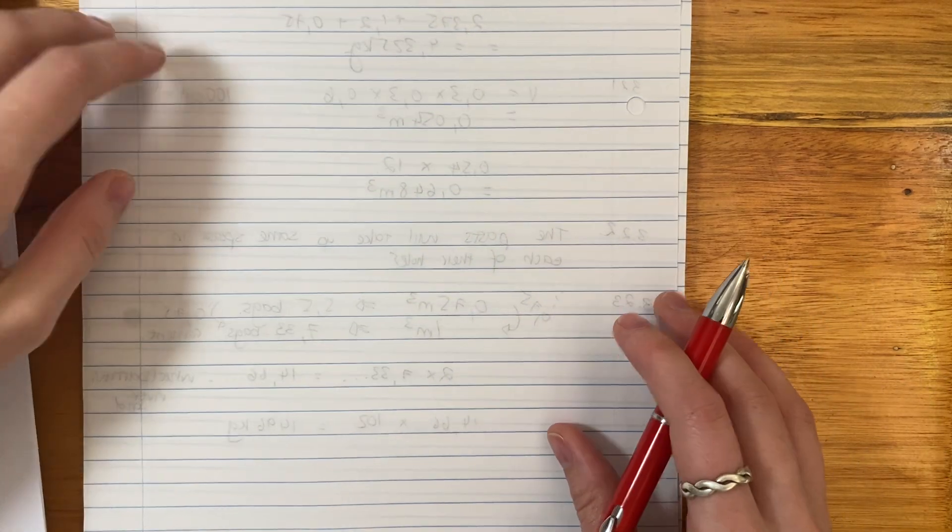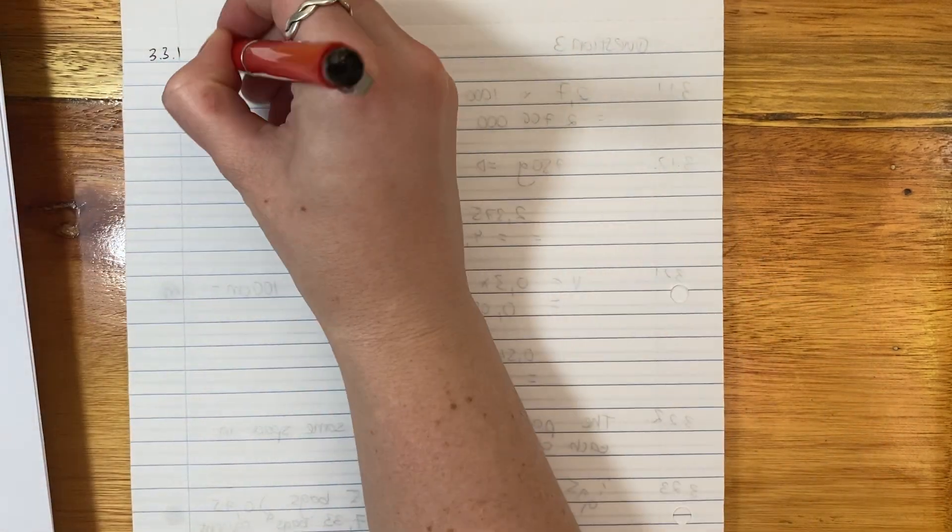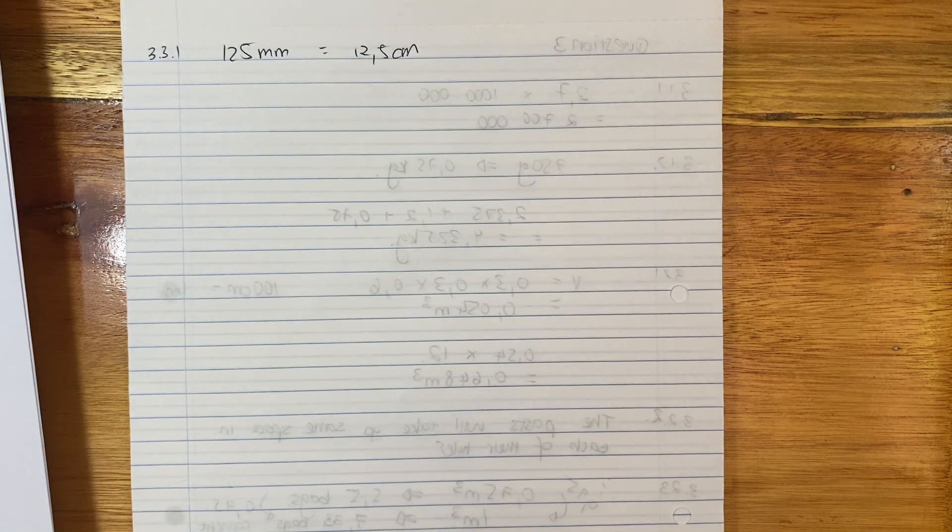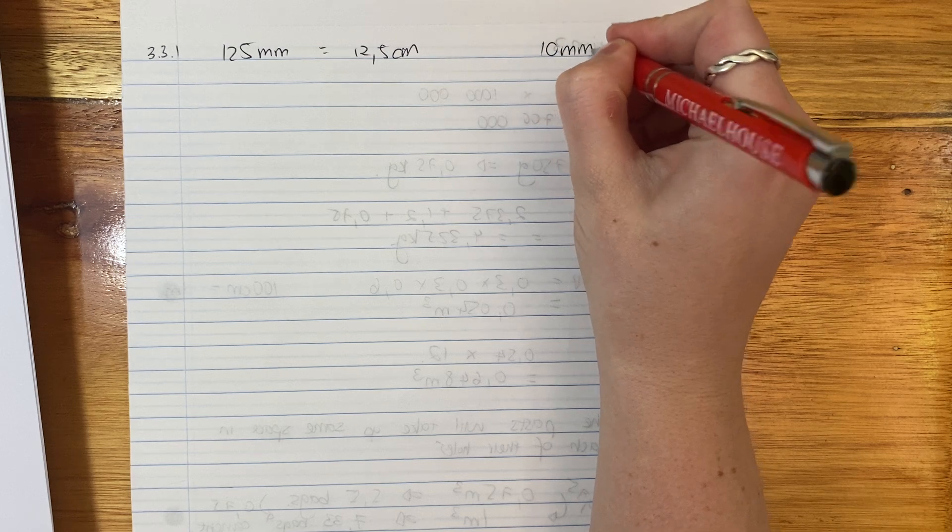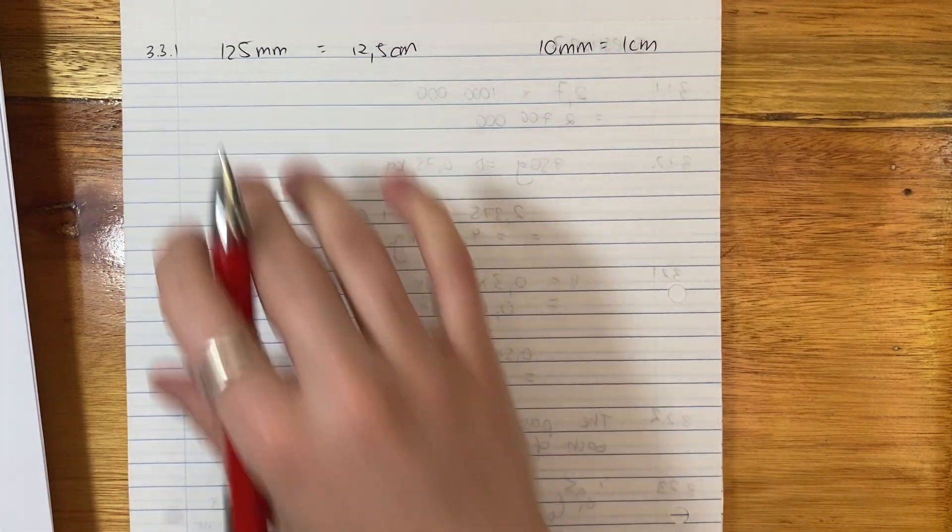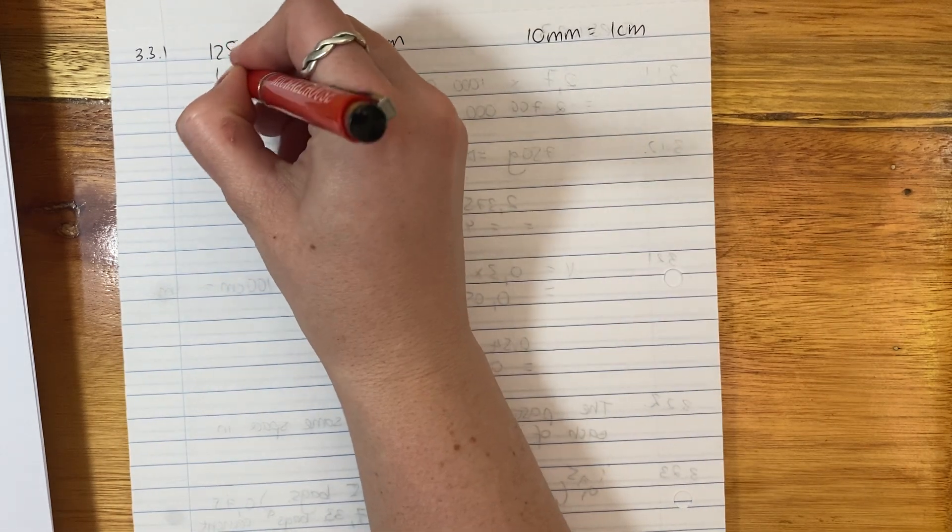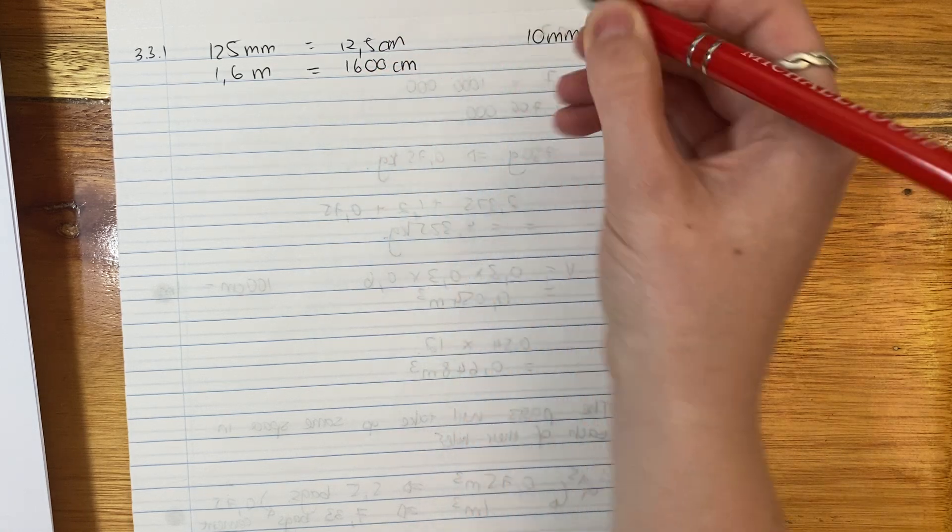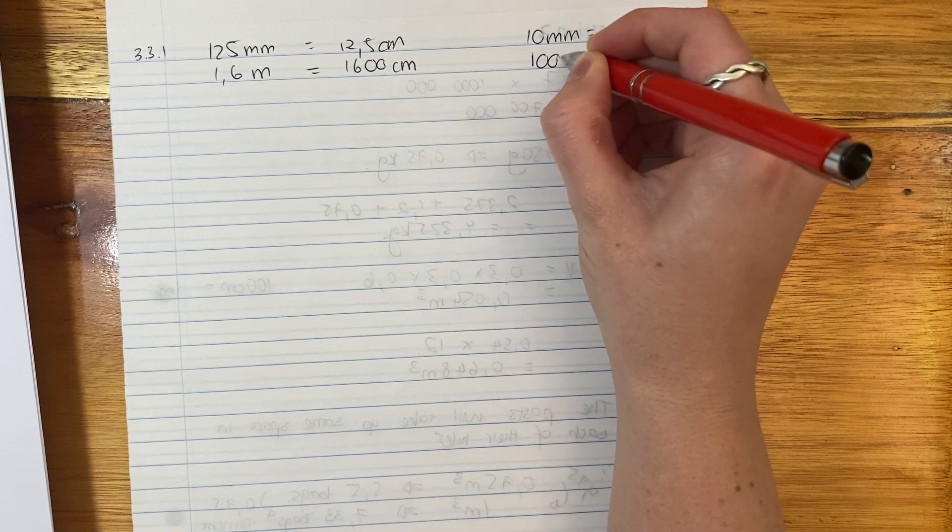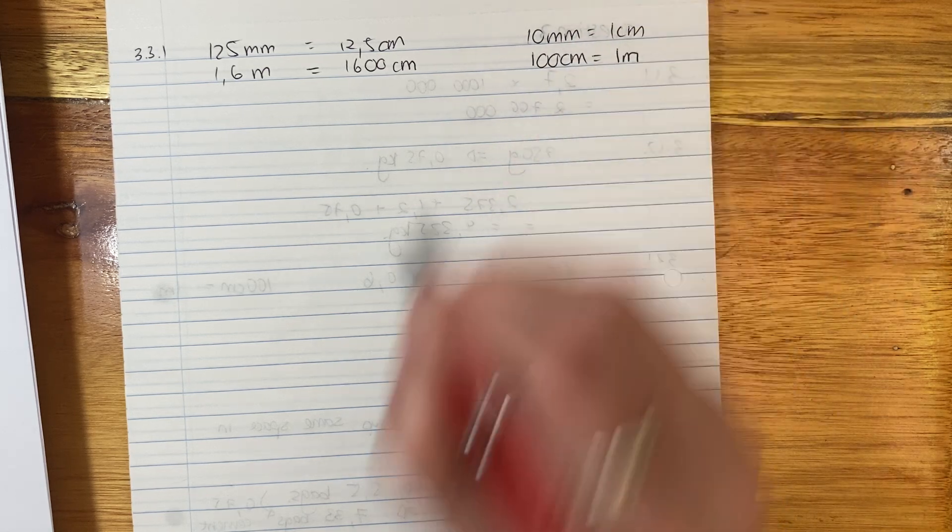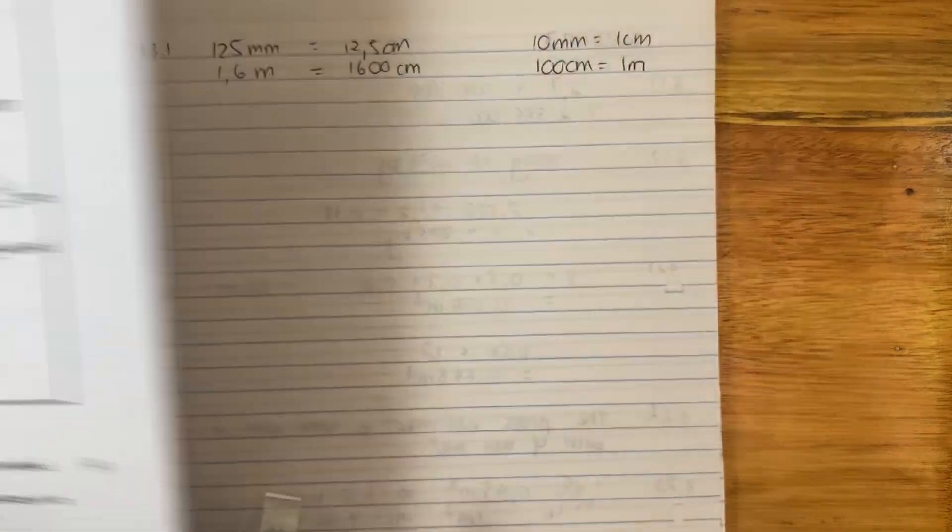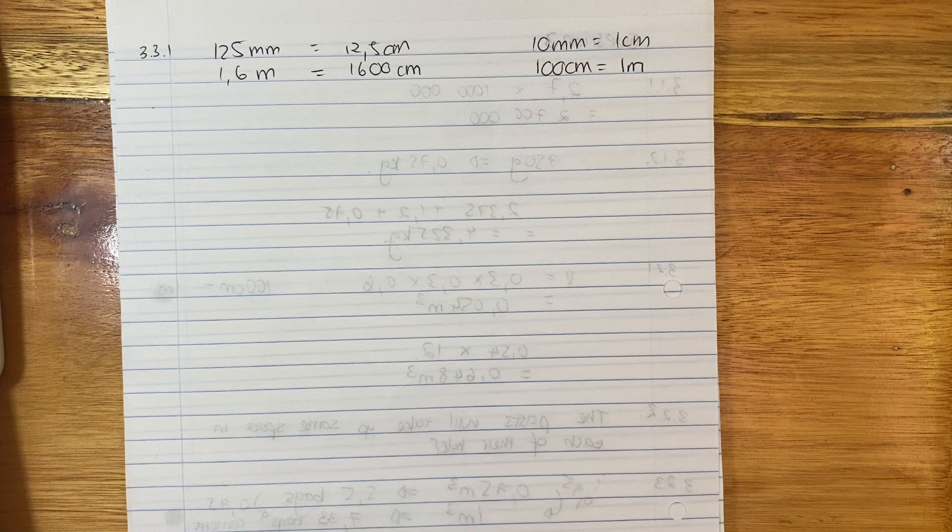Use the information above to answer the questions that follow. Calculate in centimeters squared the total area of all the post sides that has to be painted. So the post sides is this and this, that's the width and that's the length. Remember, it's just area, we're not talking about volume. Area of a rectangle, length times width. So firstly, let's put them into centimeters because it asked for centimeters.